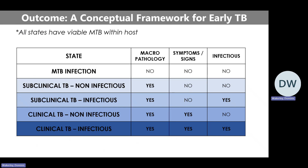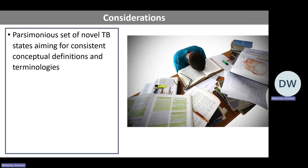We have proposed to reclassify TB into five states across three diagnostic domains, assuming all states have viable MTB within the host. The three domains are: macroscopic pathology, signs and symptoms, and infectiousness. The five states are: MTB infection, subclinical TB non-infectious, subclinical TB infectious, clinical TB non-infectious, and clinical TB infectious. The simplicity was intentional — a set of TB states with consistent definitions that are easy to remember and replicate, even for a medical student learning the new TB classification.